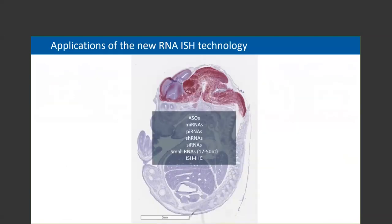Next, we'll focus on the applications of the new assay. The new assay will enable the detection of small RNAs such as ASOs, microRNAs, siRNAs, small hairpin RNAs, and siRNAs. It also supports sequential ISH-IHC detection of RNA and protein on the same tissue slide.